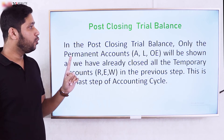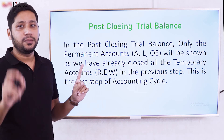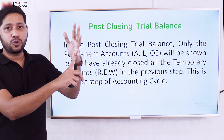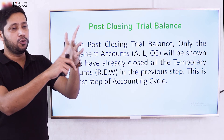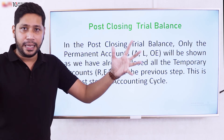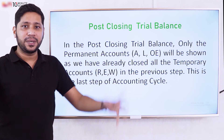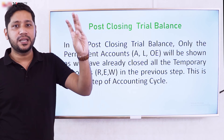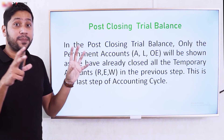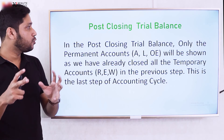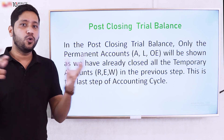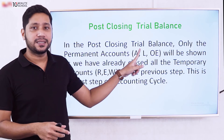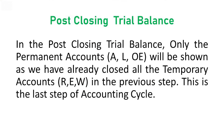The post-closing trial balance is prepared after all closing entries are made. At this point, the revenue, expense, and withdrawal accounts have been closed to zero. Only the permanent accounts remain — assets, liabilities, and owner's equity items — and these appear in the post-closing trial balance.